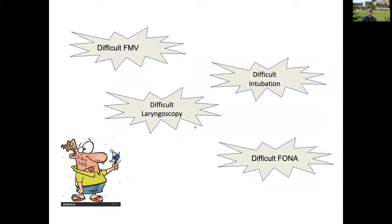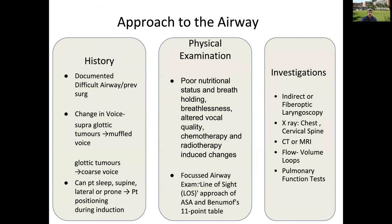These patients may have difficult face mask ventilation, difficult laryngoscopy, difficult intubation, or difficult front-of-neck access — due to radiation-induced fibrosis — or a combination. We need to assess what areas of difficulty exist and what options are available, to help categorize a Plan A, B, C for that individual patient.